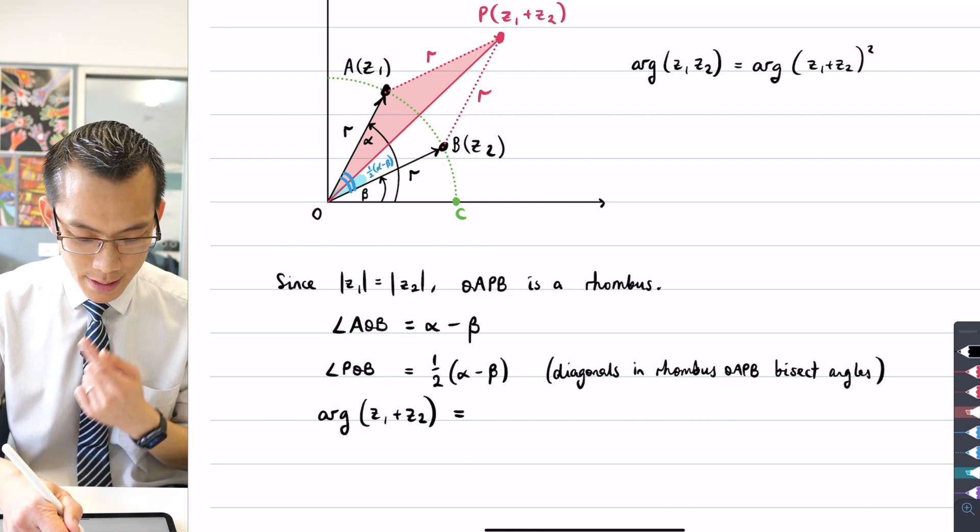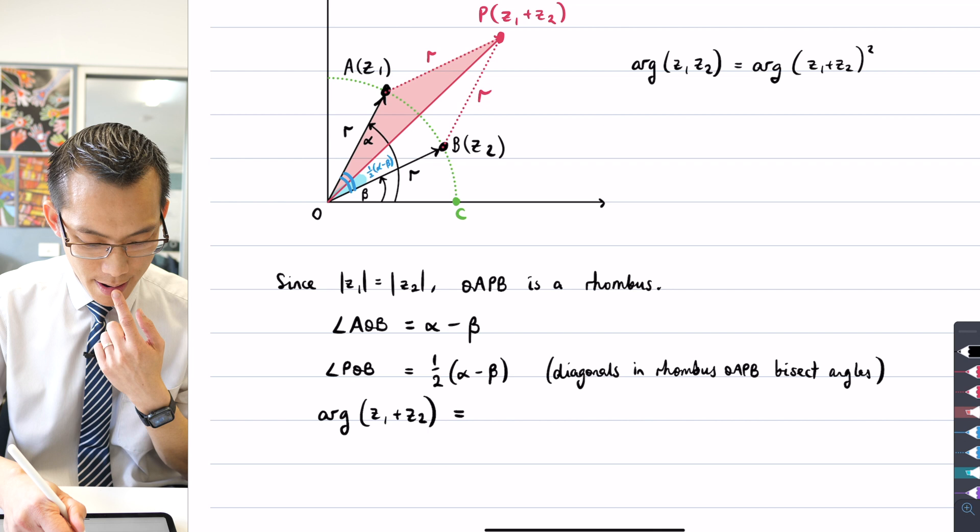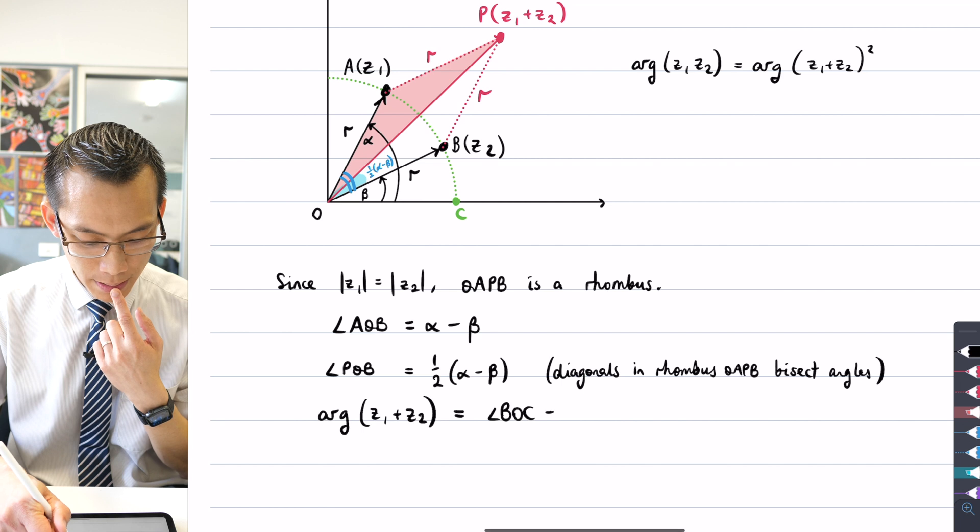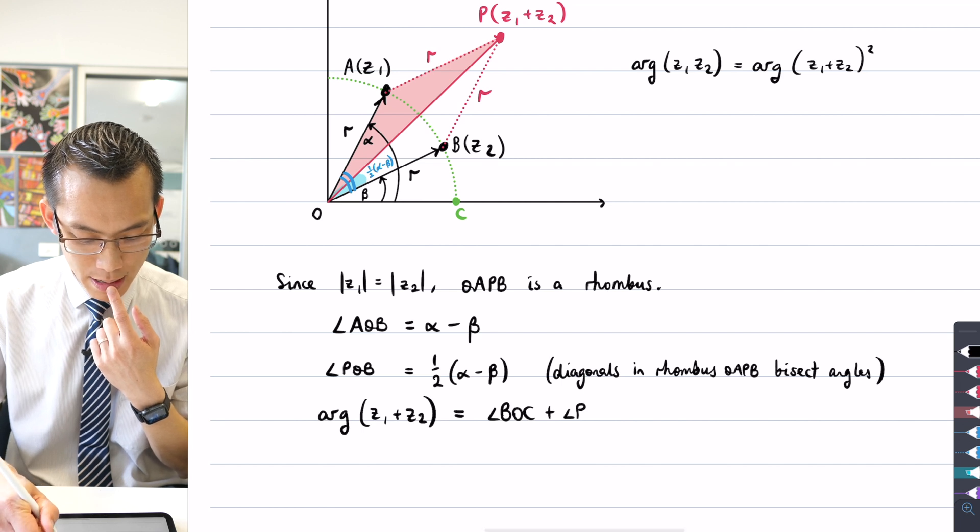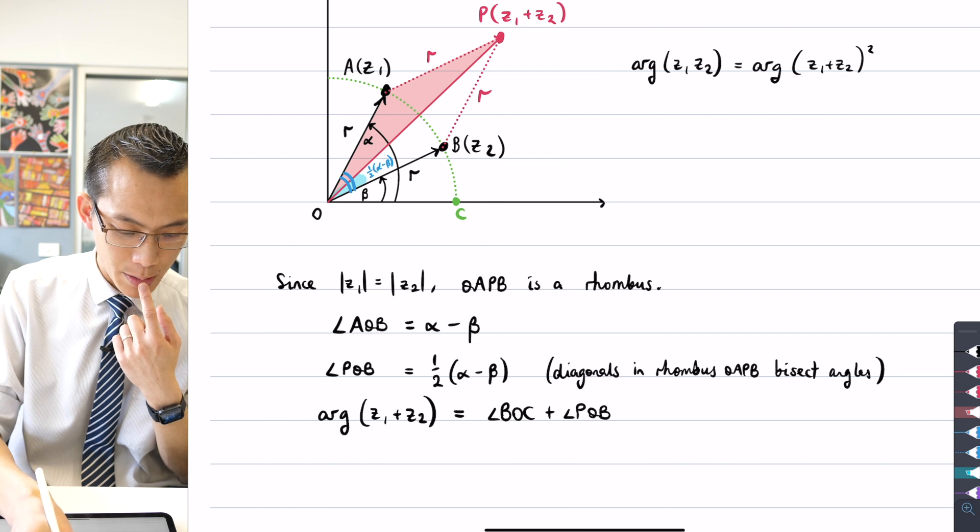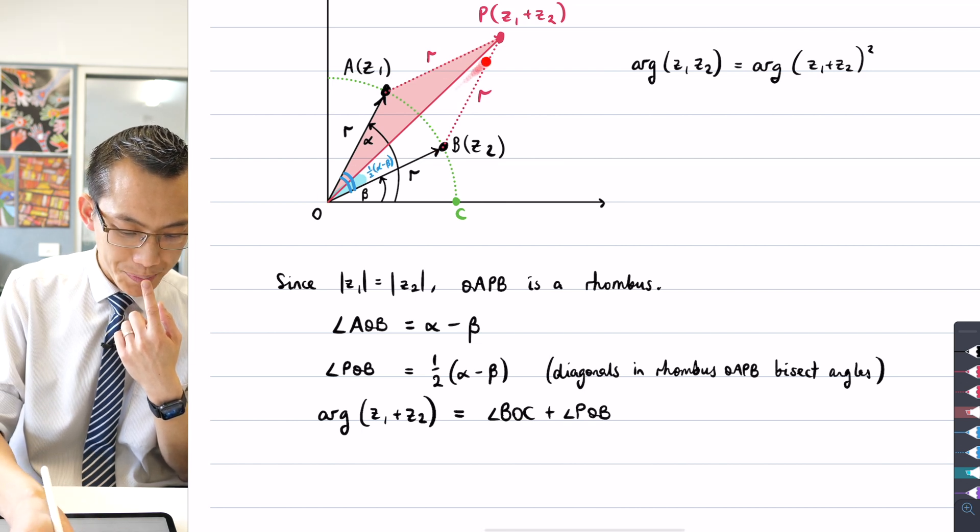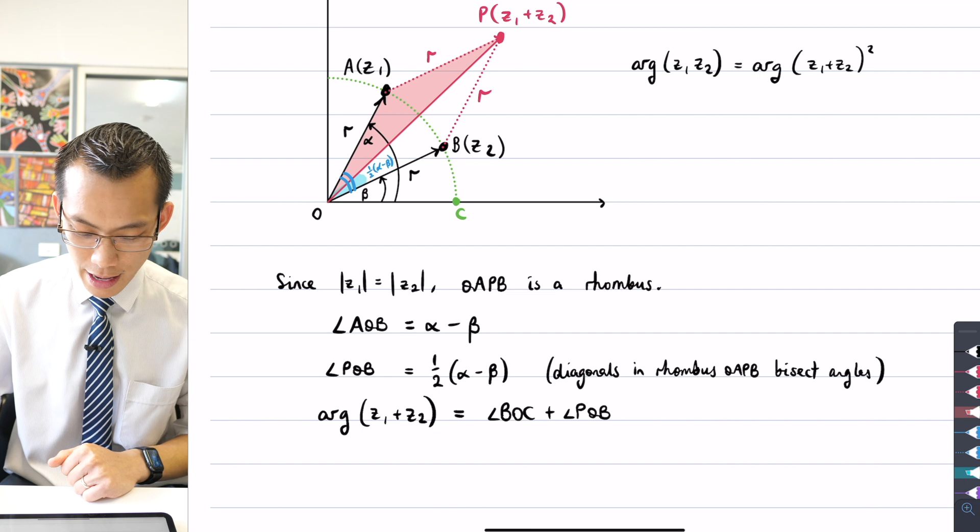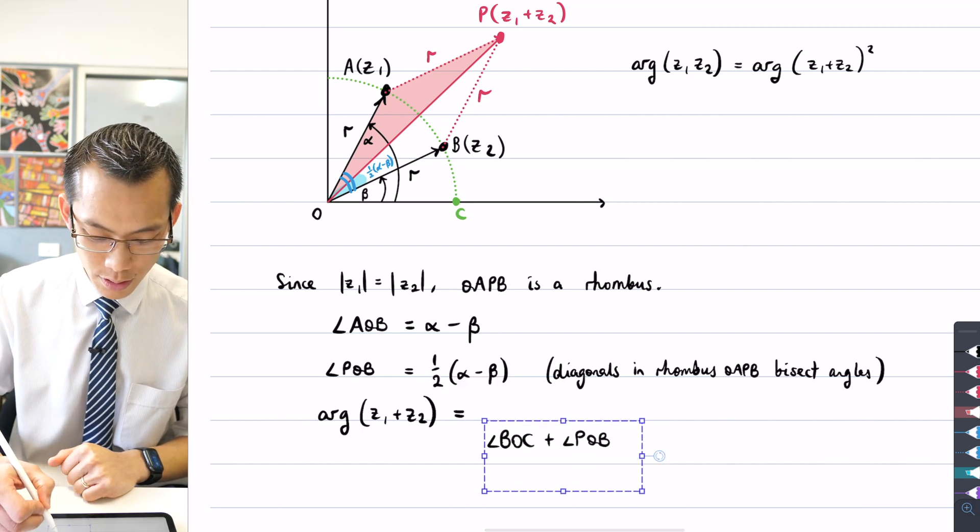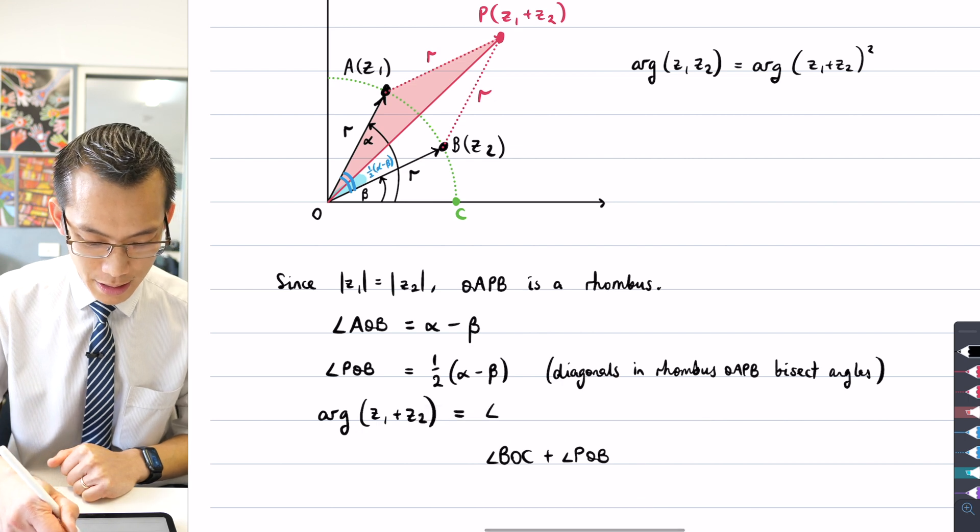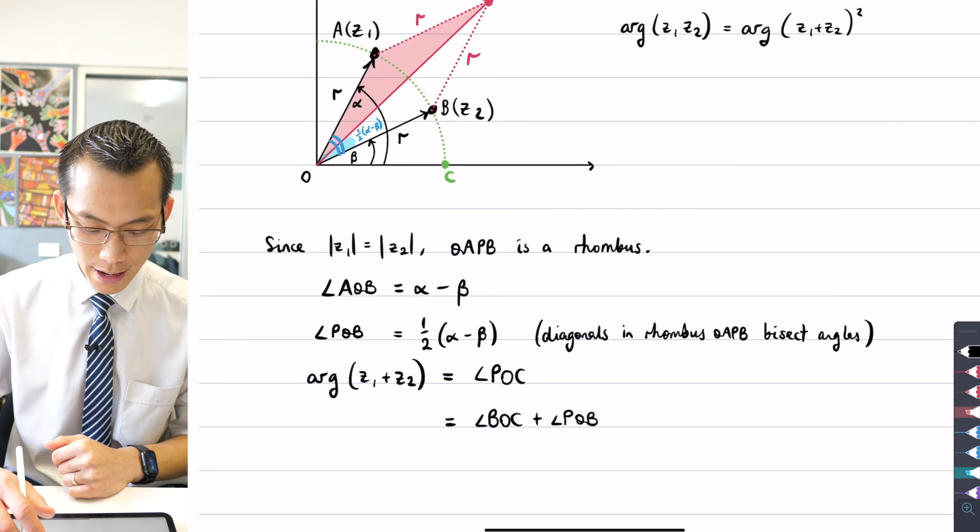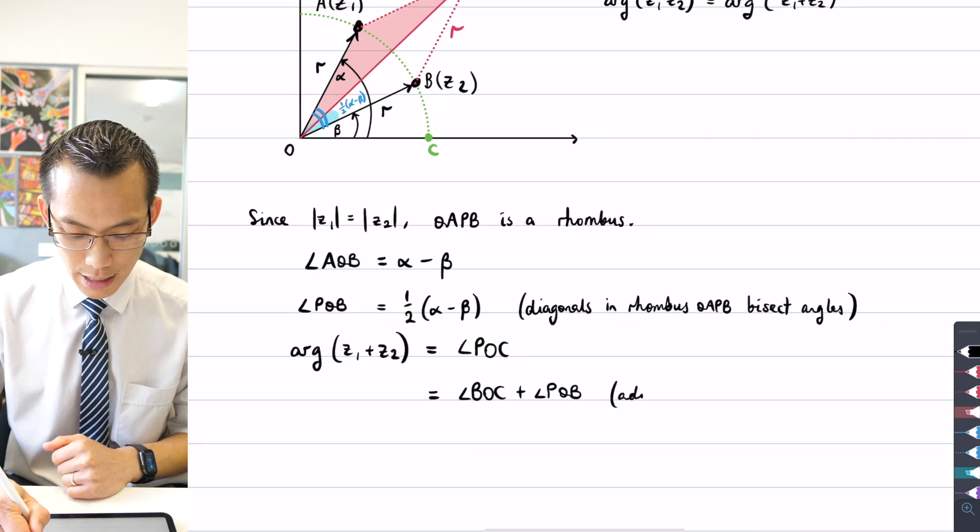Well, it's going to be angle BOC plus angle POB, which I just worked out there. You can see that's POB there. So this is going to give me the entire angle POC. That's because these are adjacent angles.